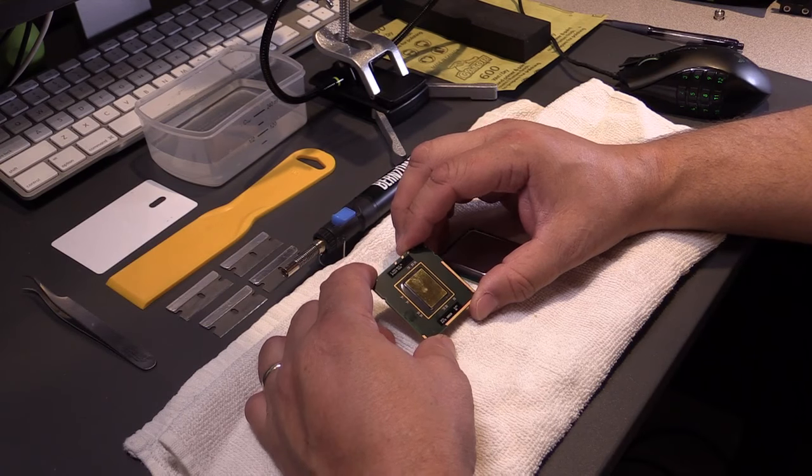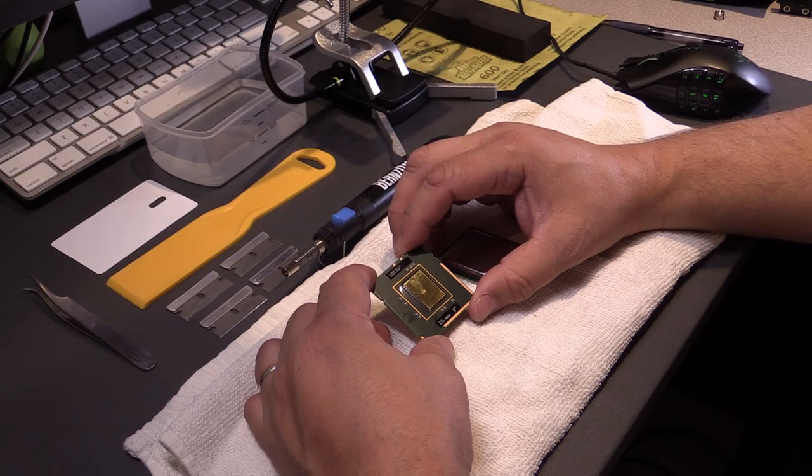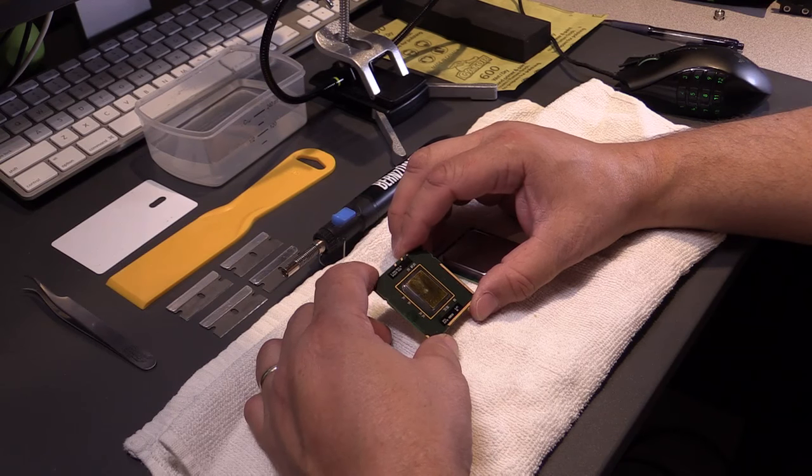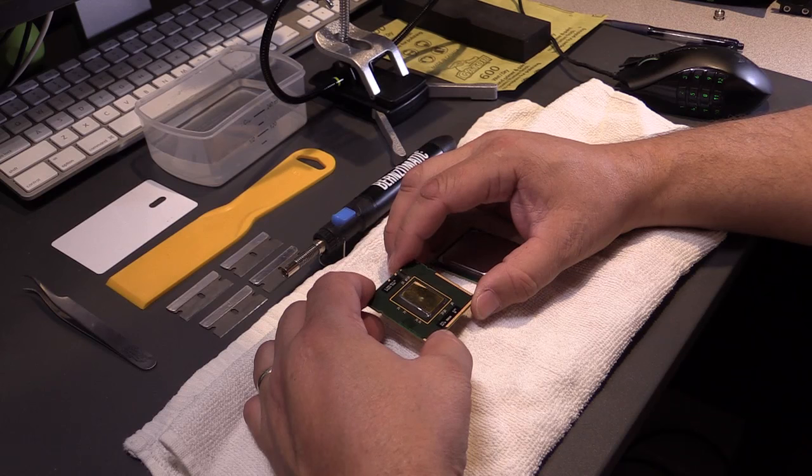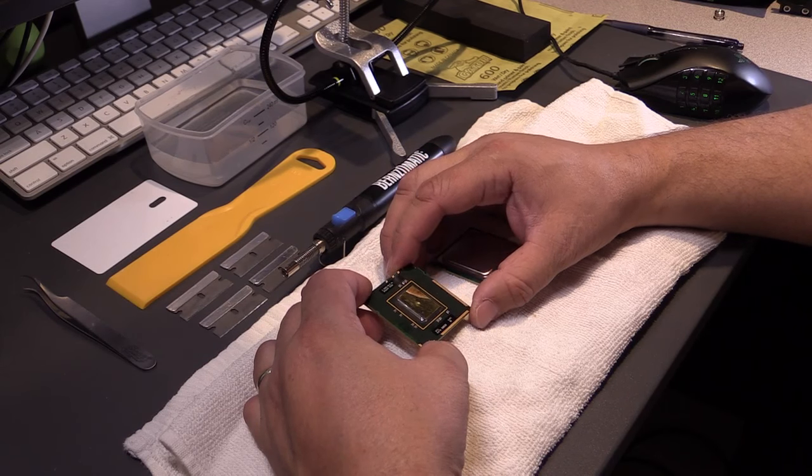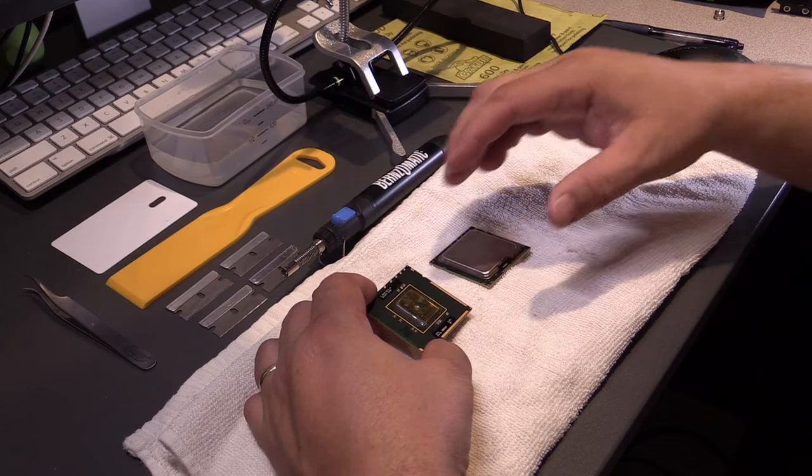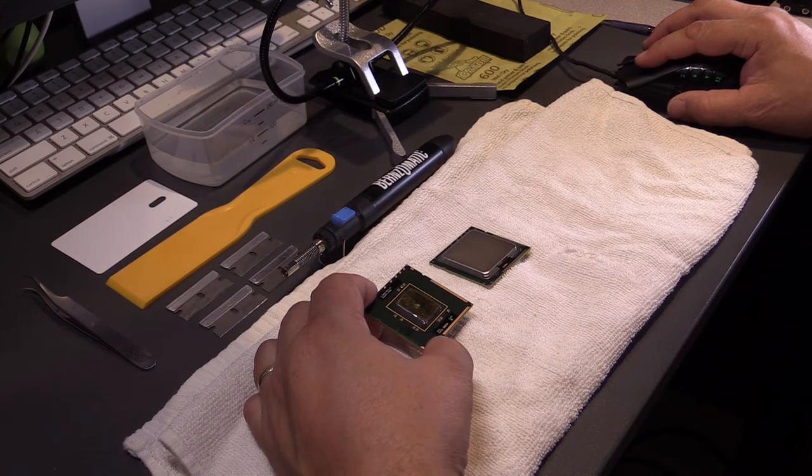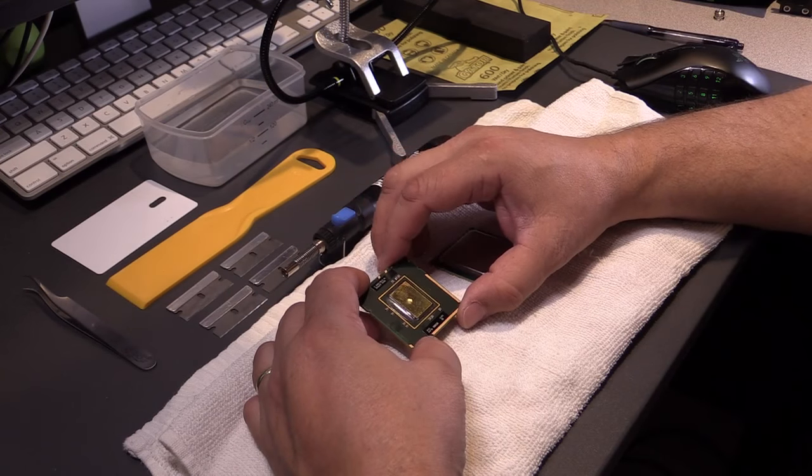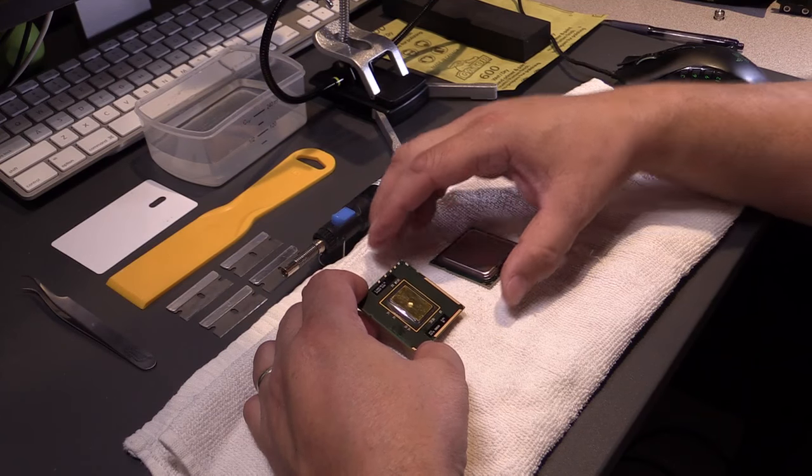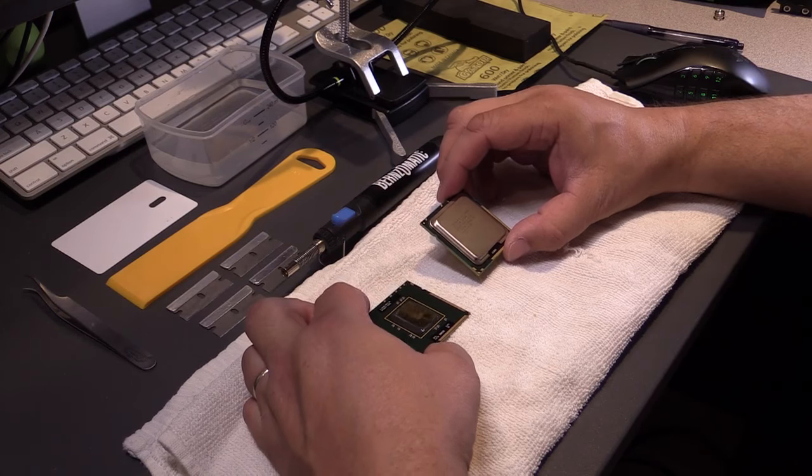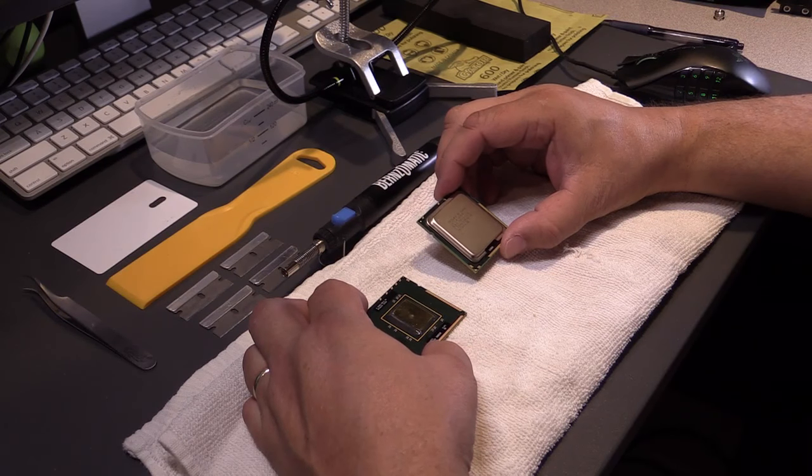This is the original Intel Xeon processor E5520. It has four cores, and there were two of these processors in the Mac Pro model which I'm actually going to be upgrading. We'll be replacing this with an Intel Xeon 5680 processor. You can see that they're identical in size, so they'll fit the slot perfectly.